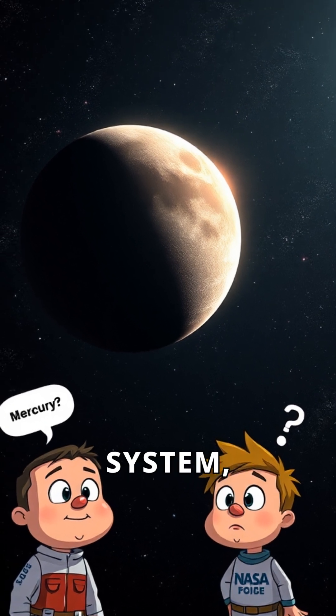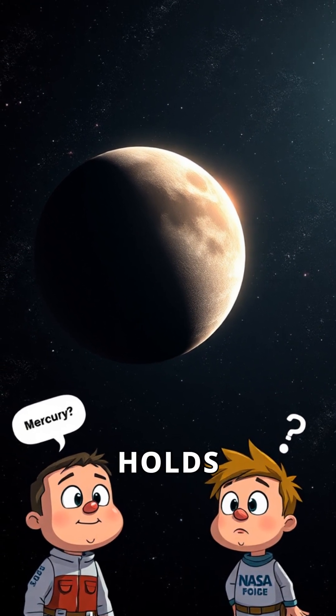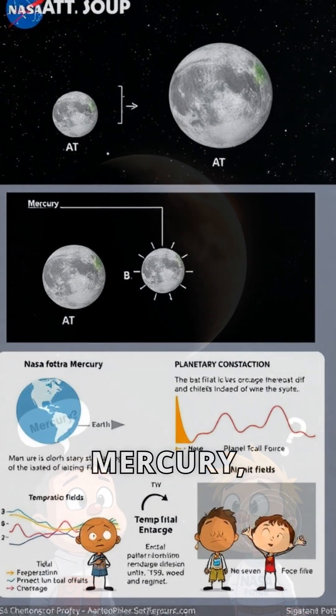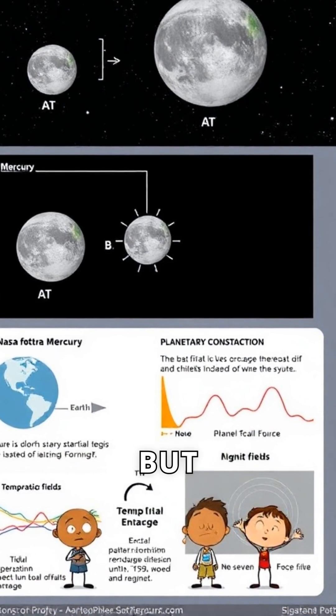In the scorching hot depths of our solar system, a tiny planet holds a big secret. Mercury, the smallest planet, is shrinking. But why?